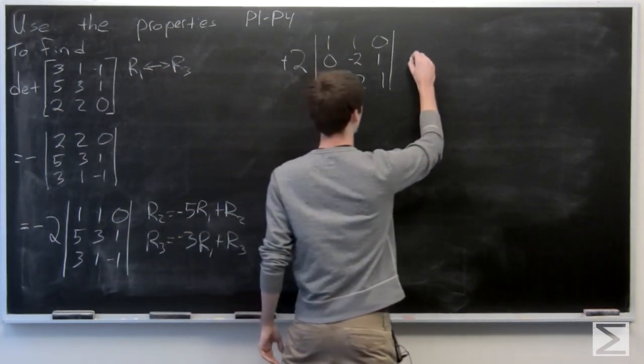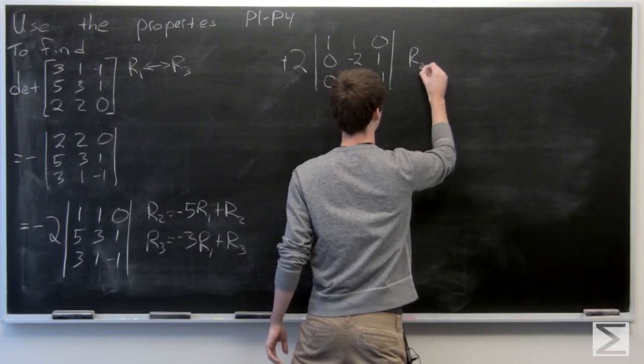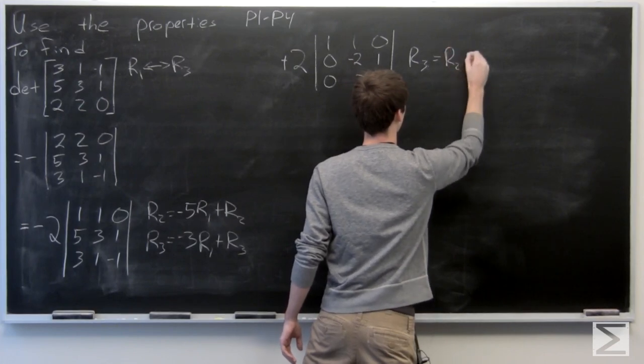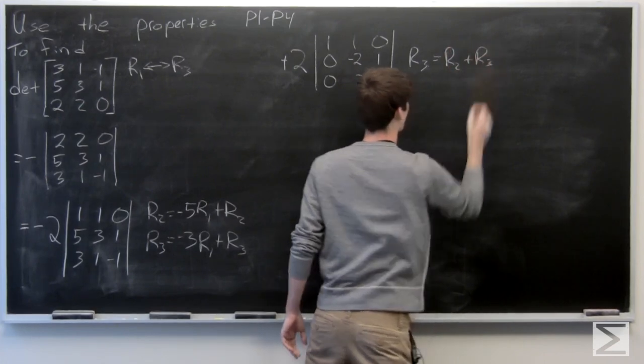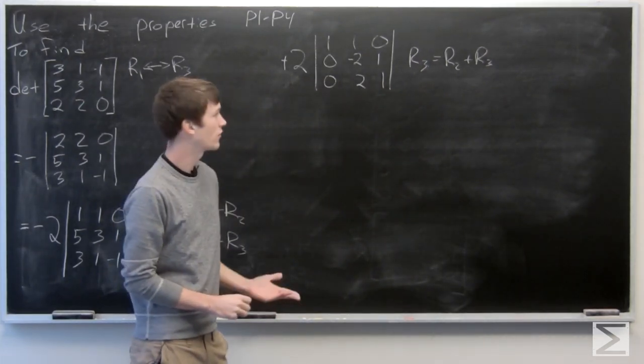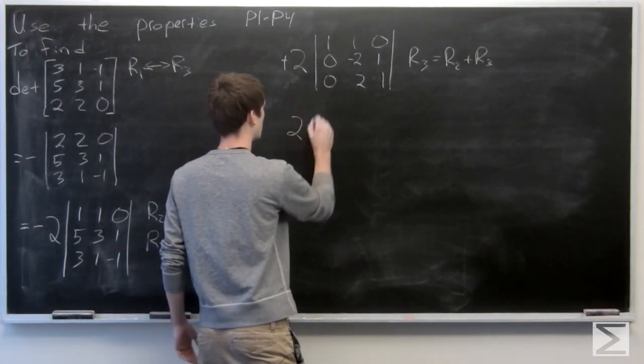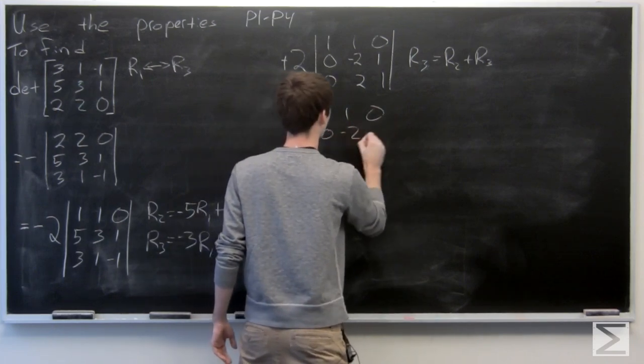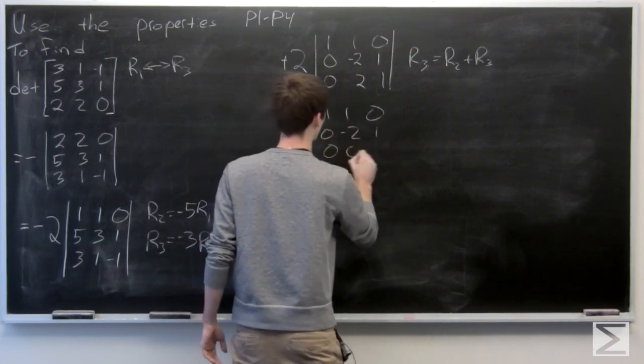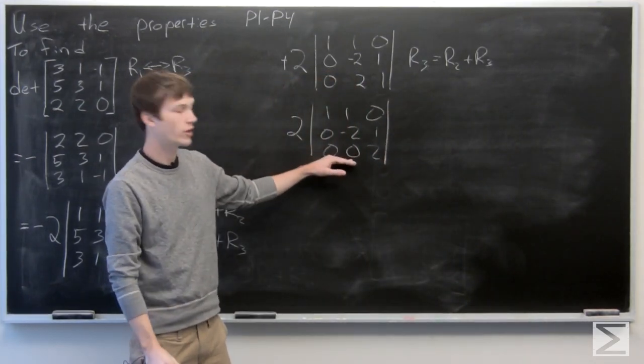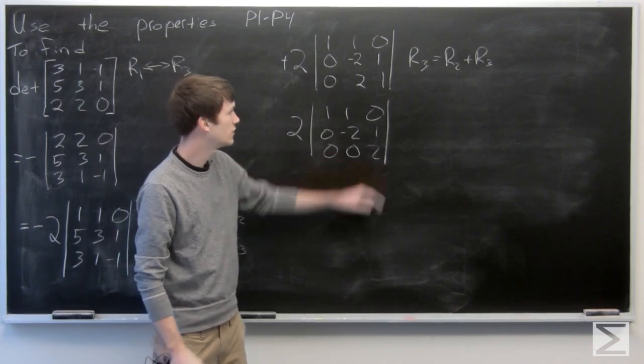So we let row 3 equal row 2 plus row 3. So we have 2 times: So our third row gets transformed to 0, 0, 2.